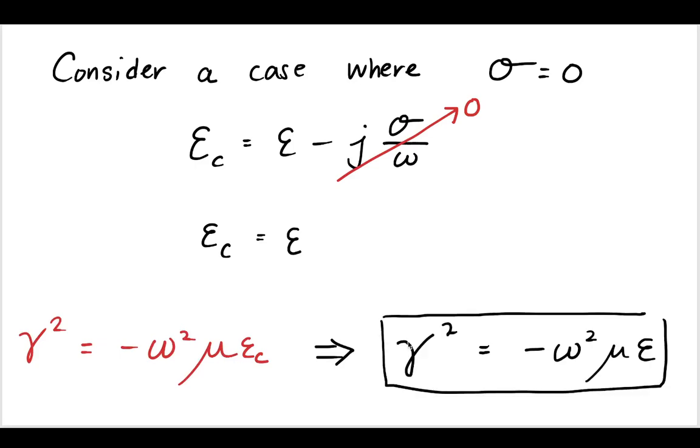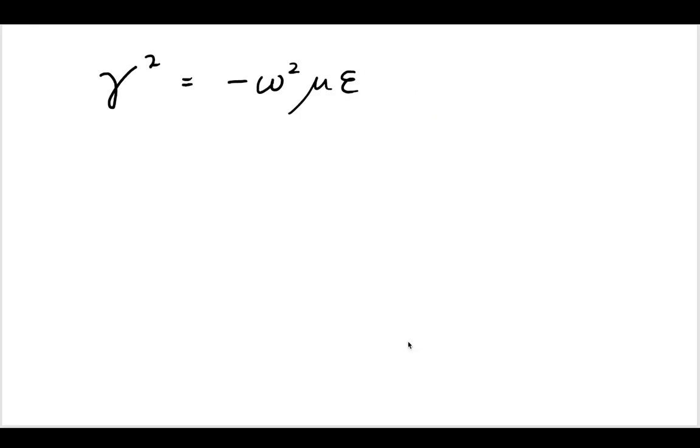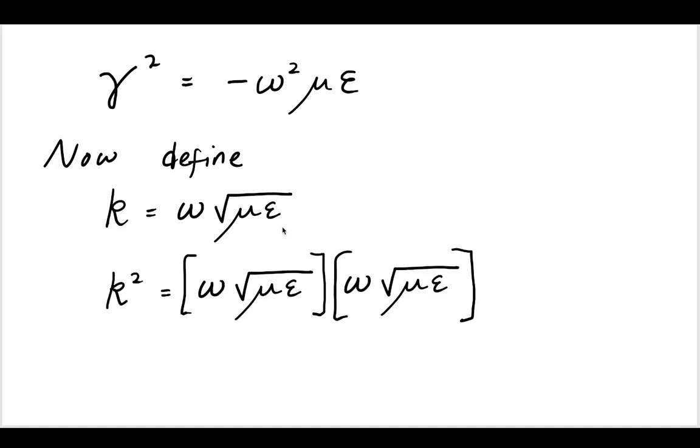And therefore, our gamma squared could be rewritten like this, where we've dropped that complex indicator. Okay, so starting from this, let's now define a k where we have the k as being just using this real epsilon. So we're in an environment where we have zero conductivity. Now, that would mean that k squared would be the multiplication of this definition, which would be equal to omega squared mu epsilon.